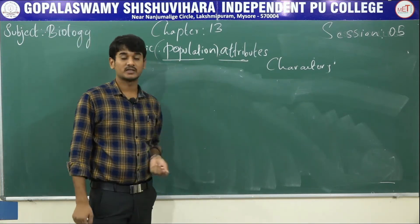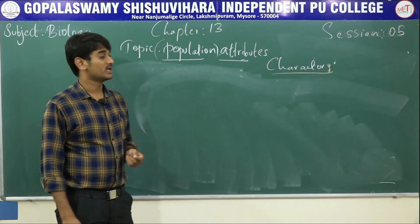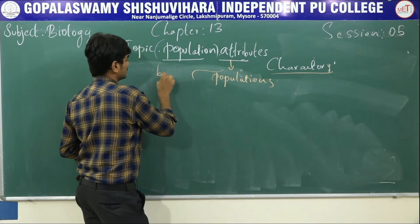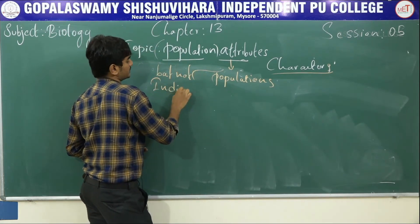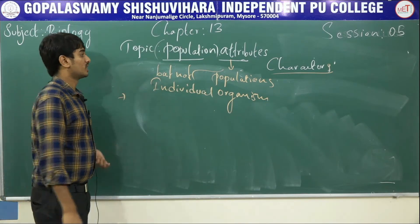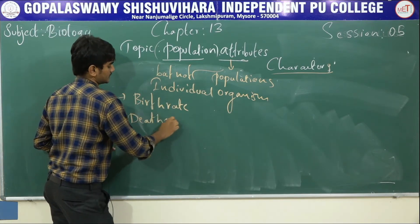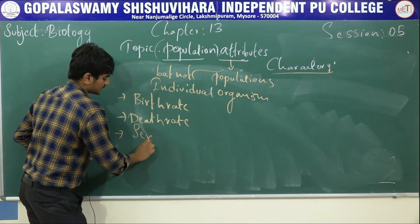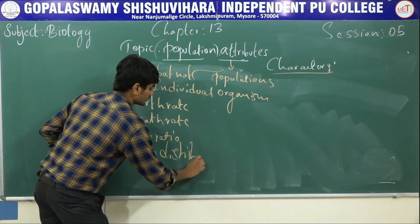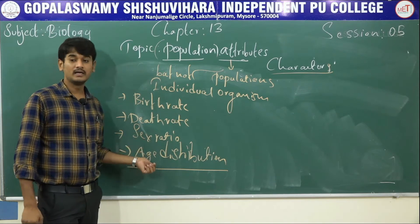Now let's discuss about attributes. Attributes means characters. There are some important attributes shown by populations but not by individual organisms — birth rate, death rate, sex ratio, and age distribution.